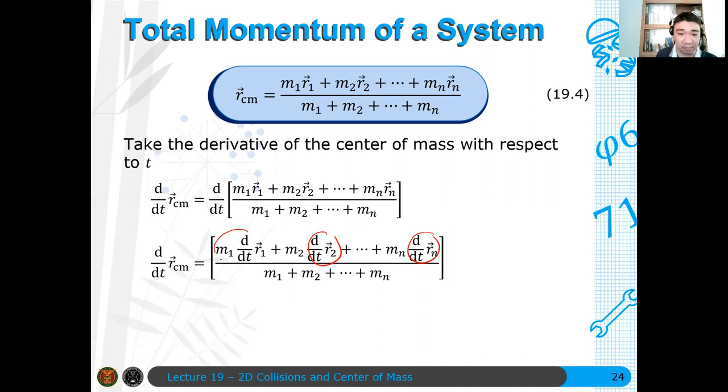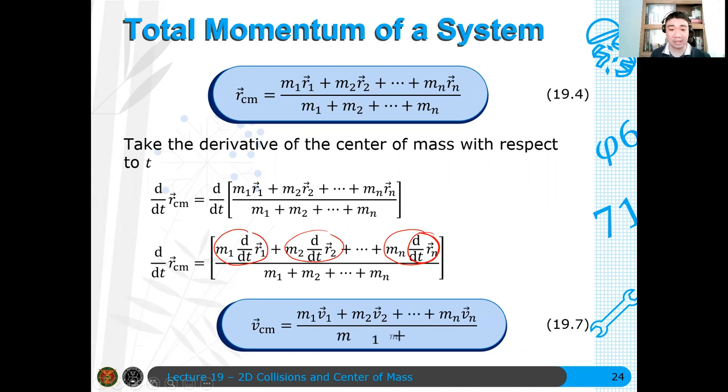So you have individual momenta here. Momentum to, momentum to, plus and so on, momentum to. Okay, so therefore we get something like VCM, the velocity of the center of mass is related to these velocities here. So parang nag-complete ka lang ng parang center of mass, pero ang hinahanap mo ngayon ay yung velocity ng center of mass.